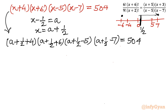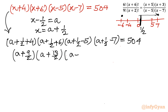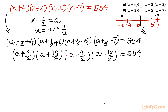Evaluating each bracket: (a + 9/2)(a + 13/2)(a − 9/2)(a − 13/2) = 504. Rearranging to apply difference of two squares: (a + 9/2)(a − 9/2) times (a + 13/2)(a − 13/2) = 504. This gives (a² − 81/4)(a² − 169/4) = 504.